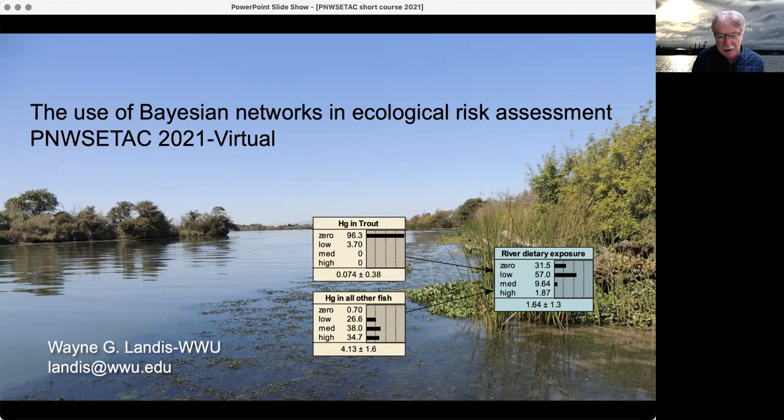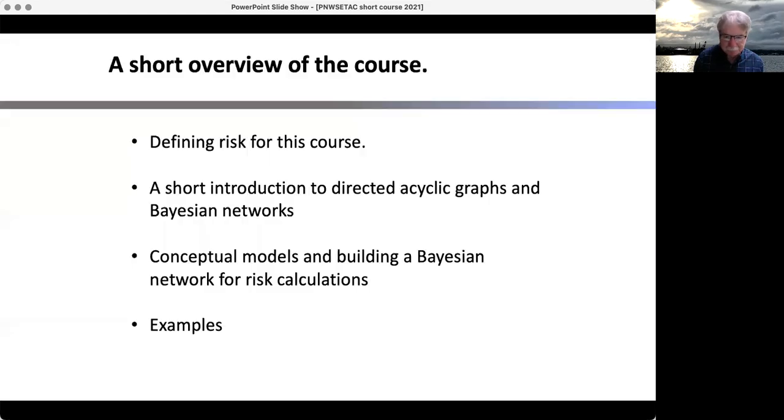This is the first part talking about ecological risk assessment and the use of Bayesian networks to do that. The second part will be an example, one from the South River. Here we go.